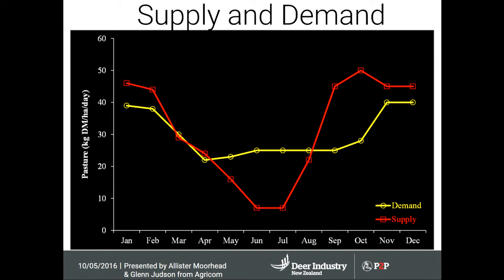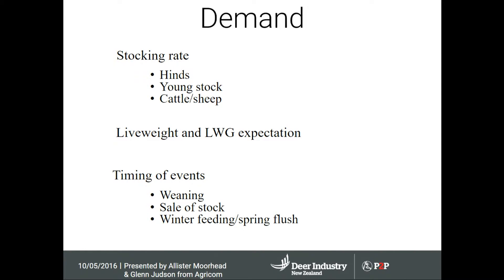Looking at the supply and demand curve, it varies based on rainfall zone, irrigation availability, and landscape — so it is not a generic topic. There are classical demand requirements of the deer and different categories of deer, and our forages are very much influenced by your region and growth potential. When we're looking at demand, stocking rate has a big part to play. It doesn't matter what forage you put on your farm — if you don't get your stocking rate right, they won't grow. Stocking rates of hinds, young stock, cattle, and sheep ratios are all big influences on animal production.